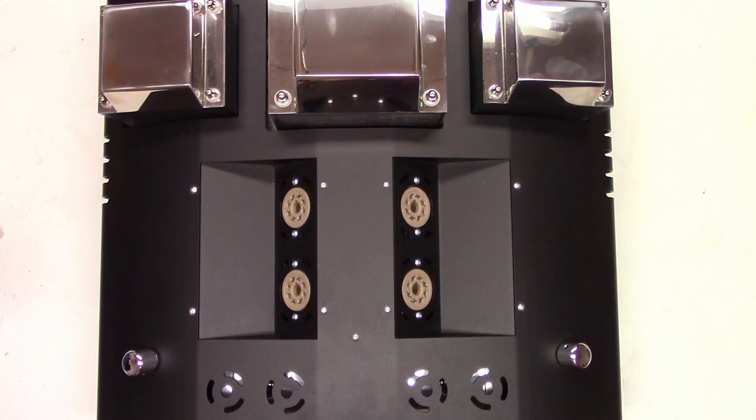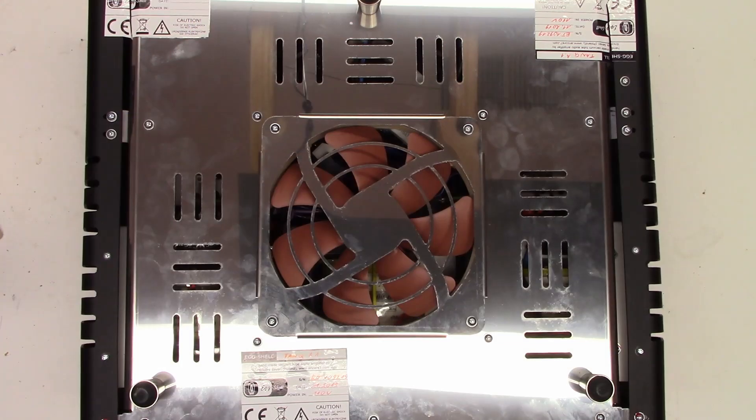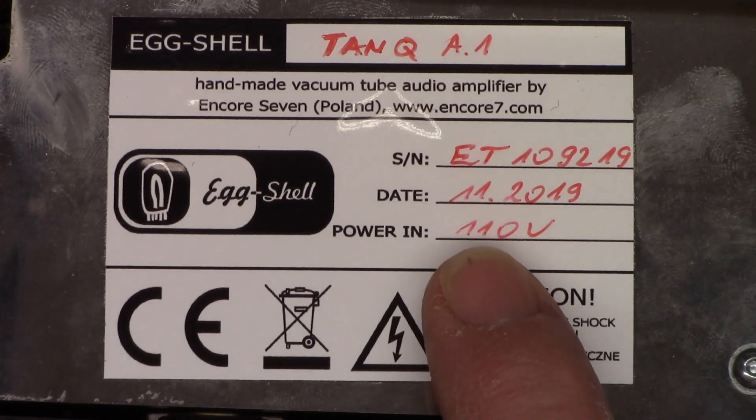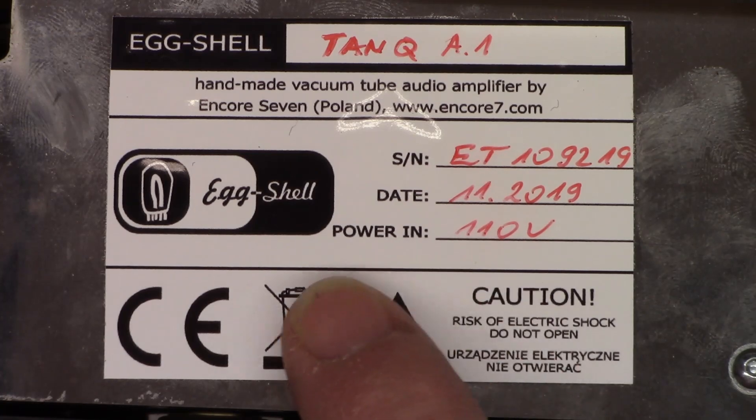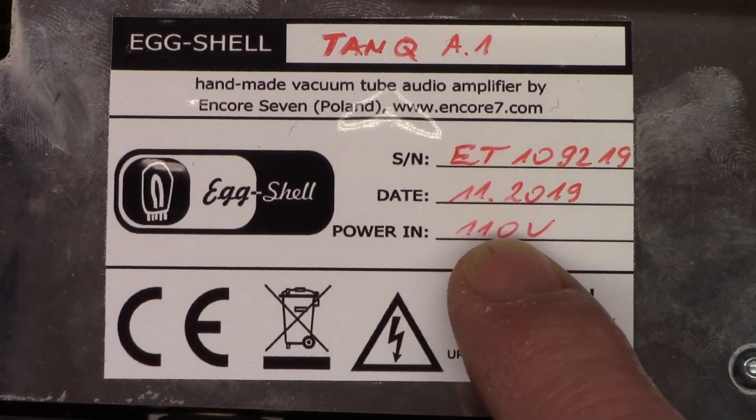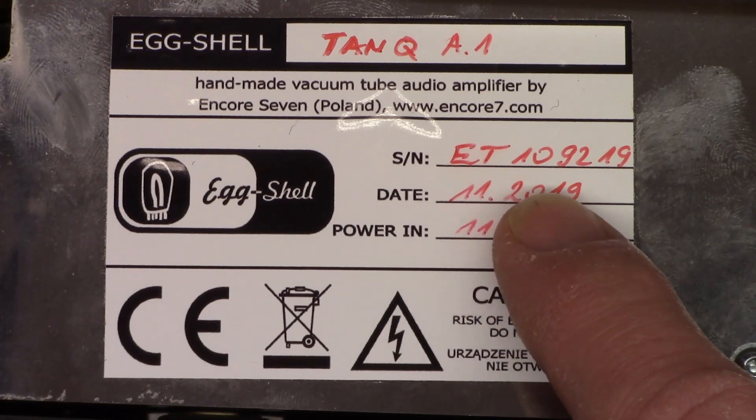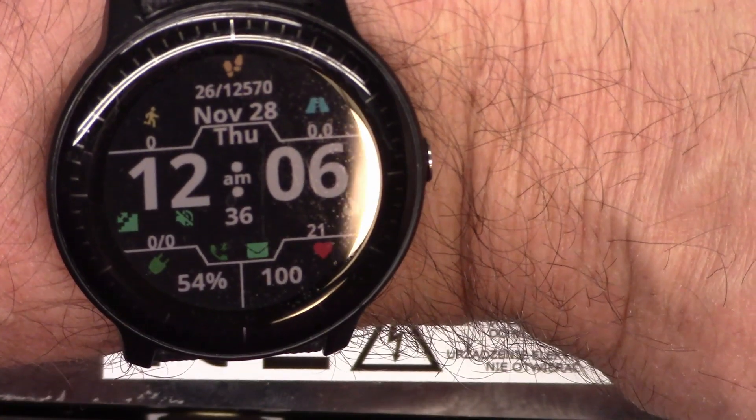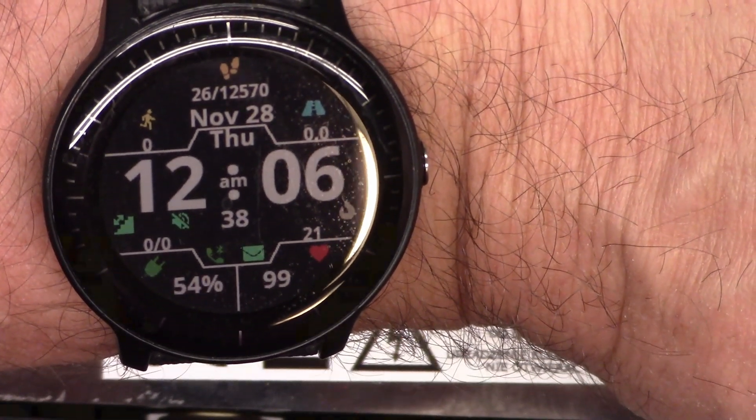And see if we can figure out what is going on with this. So looking at the bottom of this eggshell amplifier is a model TANQA.1 possibly. I assume that the TANQA.1 is actually a 1 because of the way this person wrote their 1s on the power in 110 volts. So the date is 11, 2019. This thing is brand spanking new. Because I am filming this video on November 28, 2019.